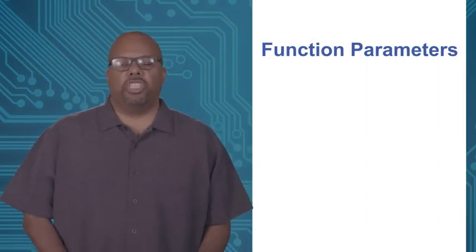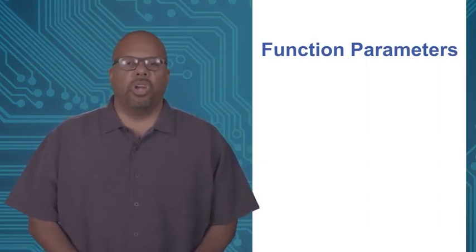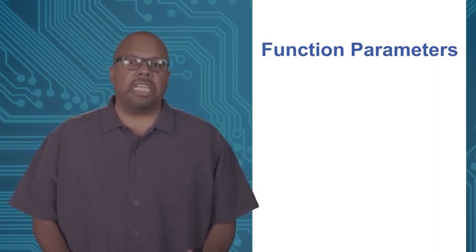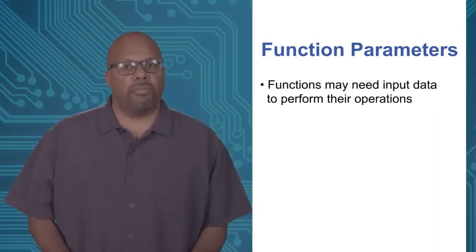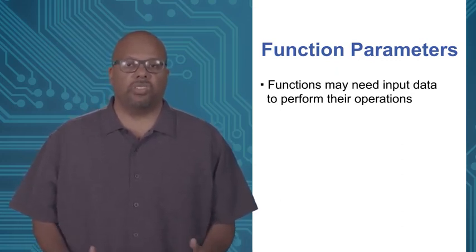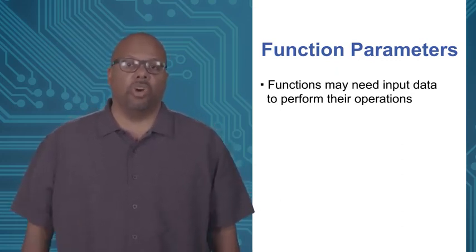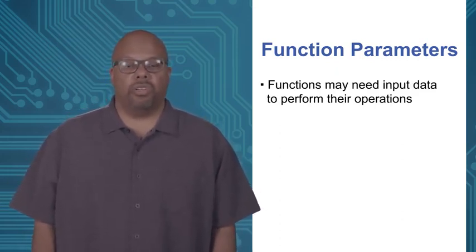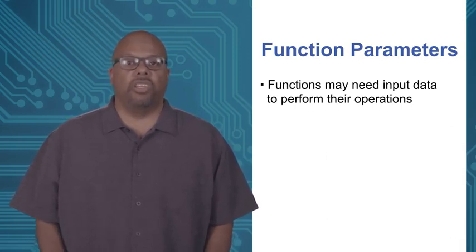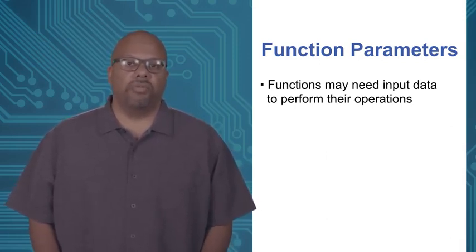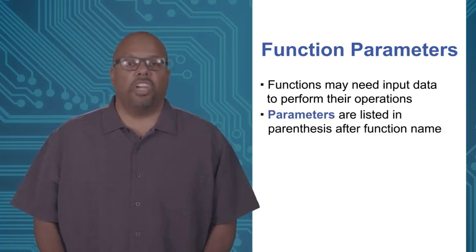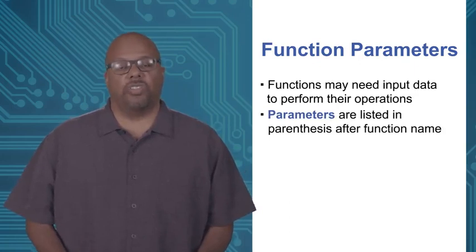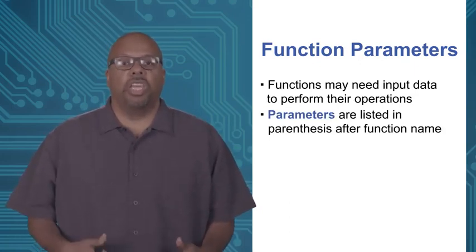The function examples we showed before were really simple. But generally, functions often need some sort of input data to operate on. Functions are sets of instructions, but they need some data to work on. It is very common for a function to have a set of what are called parameters — variables listed right after the function name in the declaration, in the parentheses. These become local variables used as inputs to the function.